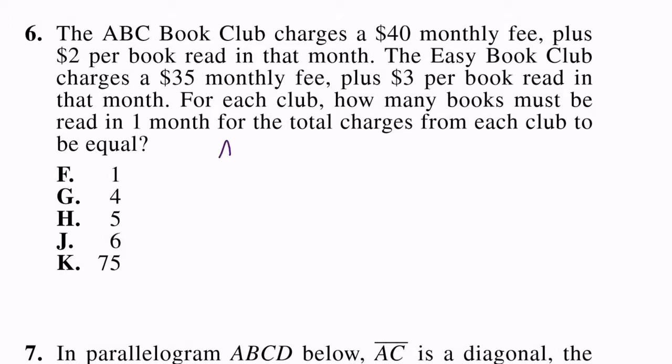So the ABC Book Club, we know they charge a $40 monthly fee and then $2 per book read. So we're going to say X is books read. So $40, it doesn't matter how many books you read, everyone's charged $40. And then $2 additional for every one book read. And we're going to set that equal to the Easy Book Club, which we'll call ABC. And they charge a standard $35 fee per month and then $3 per book. So that's 3 times X.